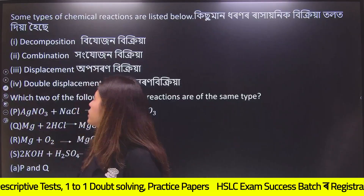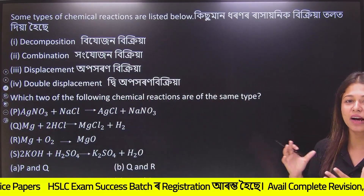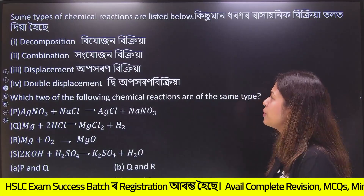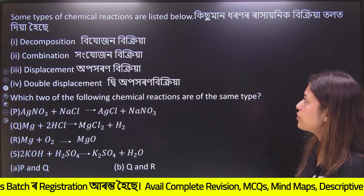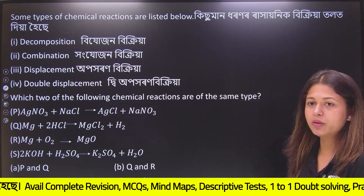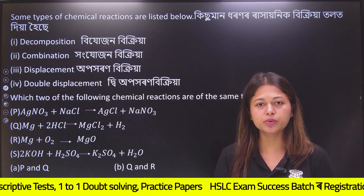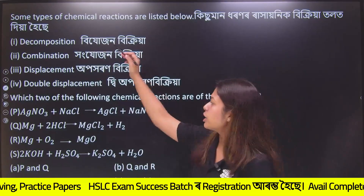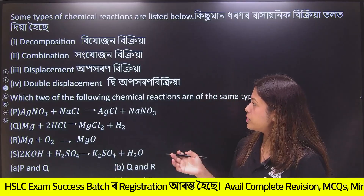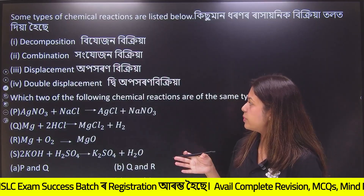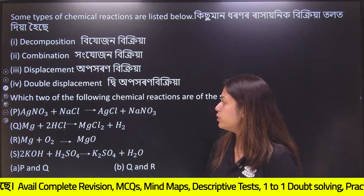Third question: some types of chemical reactions are listed below. So what are you told? Some types of chemical reactions are listed below: Decomposition, Combination, Displacement, Double Displacement.